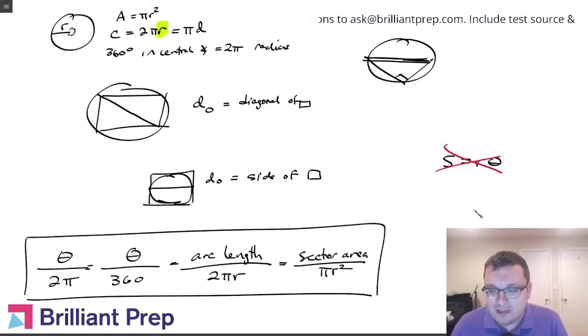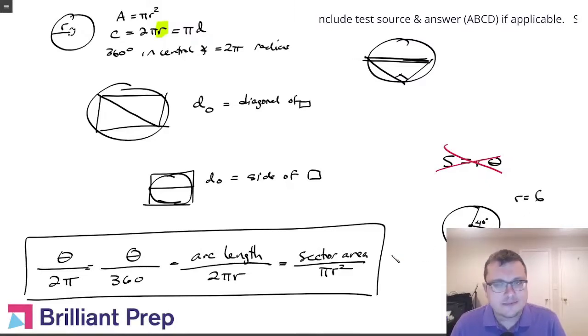For example, let's say we had a circle, and we know that this is 40 degrees, and the radius is 6. The question's asking, what is the length of arc AB?